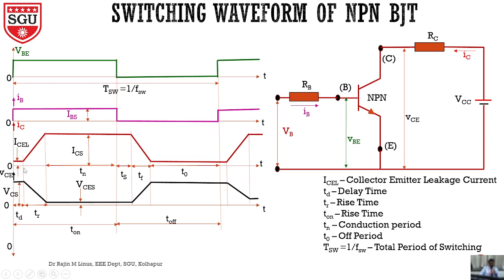Before the rise time, the collector current takes some time to begin increasing — that is called delay time TD. We can see it here: this is the delay time. Then after delay time, the collector current will start to increase — this is called the rise time. During the rise time, the voltage across the collector-emitter will start to reduce.